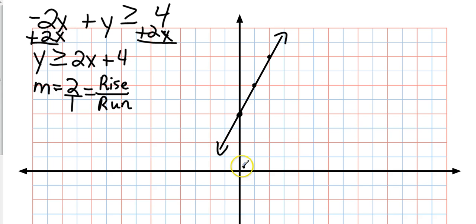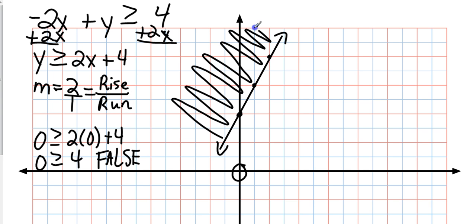Now, there's 0, 0. So let's plug that into the equation. Everywhere I see a y, I'm going to replace it with a 0. Everywhere I see an x, I'm going to replace it with a 0. Is 0 greater than or equal to 4? And that is false. So I want to shade the area that does not include 0, 0. So I'm going to go the other way. And that is the graph of y is greater than or equal to 2x plus 4.